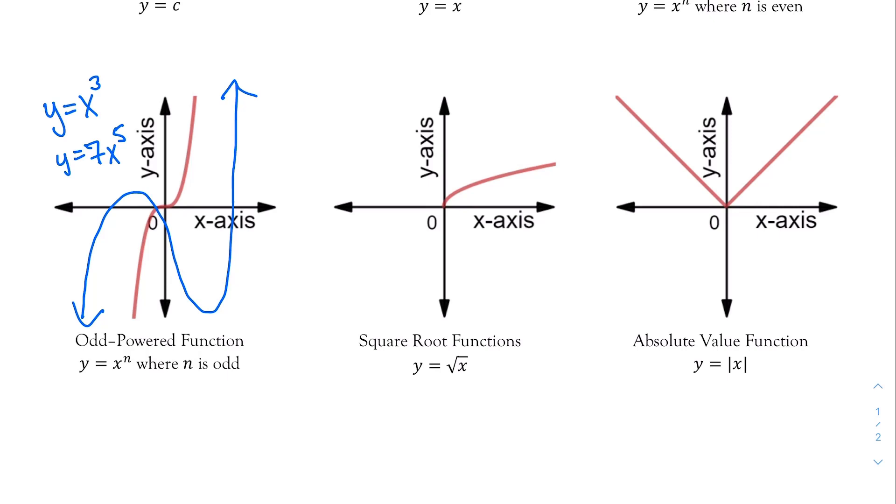For my fifth function, I have the square root function. That is functions that have the form y is equal to square root of a value. These tend to look like a half parabola or a half u turned sideways. Notice that here for my square root function, there's nothing on the left. Well, this is because we know that whenever I take the square root of a negative number, I get imaginary answers, I don't get real numbers.